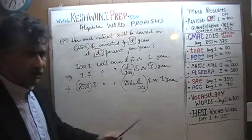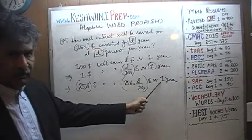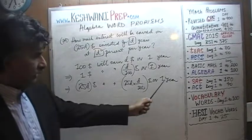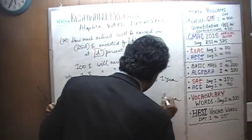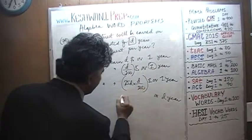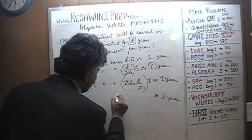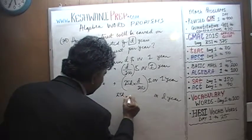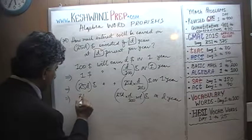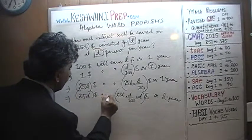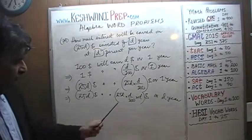We are not investing it for one year — we are investing it for D years. So if this is the amount we earn in one year, then in two years we earn twice as much, in three years three times as much. Therefore in D years we earn D times this amount: 25D times D over 100, times D dollars — that is how much we will earn on the investment of 25D dollars.